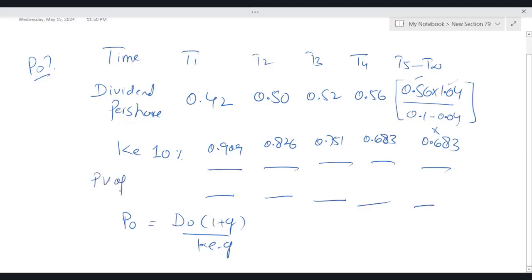Present value of dividend per share: 0.42 into 0.909, I'm getting 0.38. 0.50 into 0.826, 0.412. 0.52 into 0.751, 0.39. 0.56 into 0.683, 0.382.